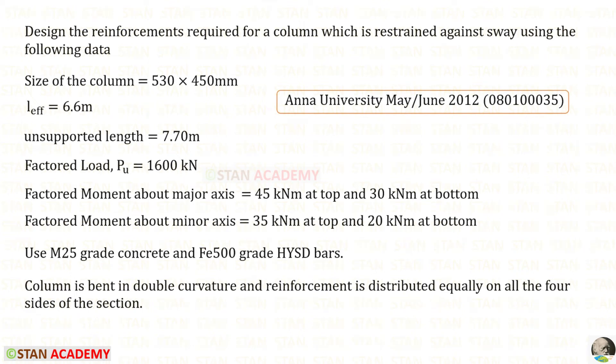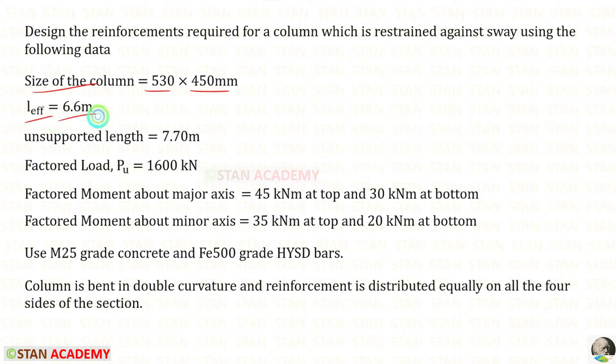Hello everyone. Today we are going to do a problem based on slender columns. In this question, the data is given very clearly. The size of the column is given. The effective length is given. The unsupported length is given. The factored load PU is given. Factored moment about major axis and minor axis are given. FCK and FY are given. Also a condition is given. Column is bent in double curvature and reinforcement is distributed equally on all the four sides of the section.